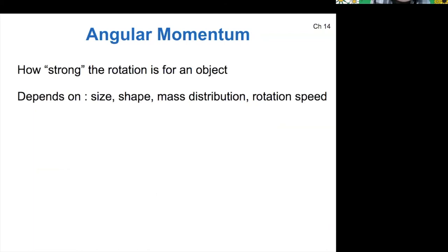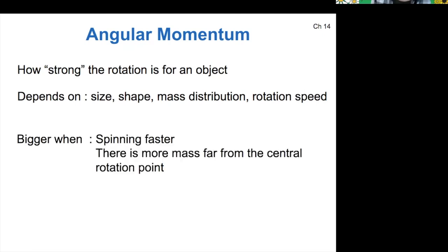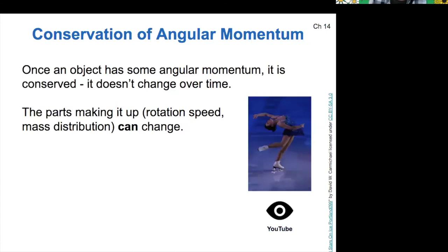So this basically tells us how strong is the rotation for some object. I won't get into the exact physics here, but it depends on the size of your object, the shape of your object, and how the mass is distributed within it. And then also on the rotation speed of that object. So angular momentum as an overall quantity is bigger when you're spinning faster. It's bigger when there's more mass far away from the central rotation point.